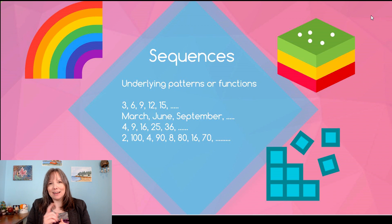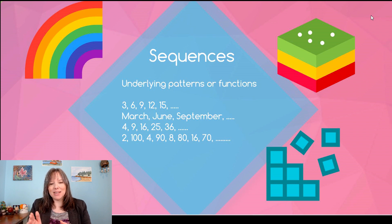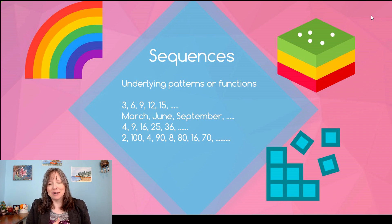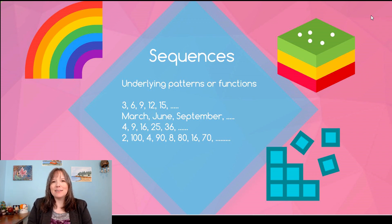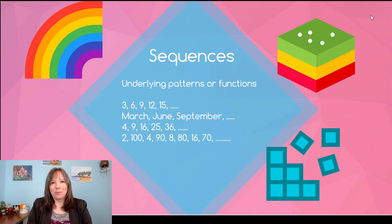If we look at every other number — the odd-positioned ones — we get 2, 4, 8, 16, which shows a doubling function. Then looking at the even-positioned numbers: 100, 90, 80, 70, we see a reduction-by-ten function. So that helps us predict what comes next: 32, followed by 60. Sequences can be easier or harder, and to solve them you really have to understand the mathematical pattern.